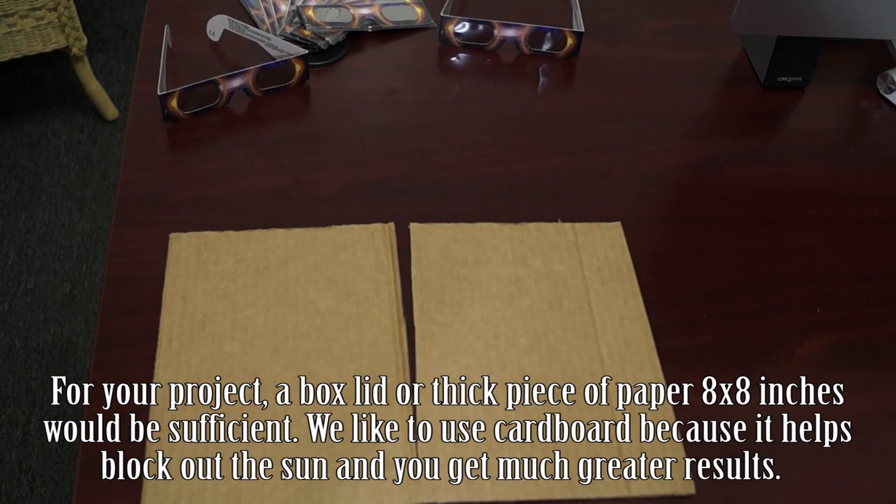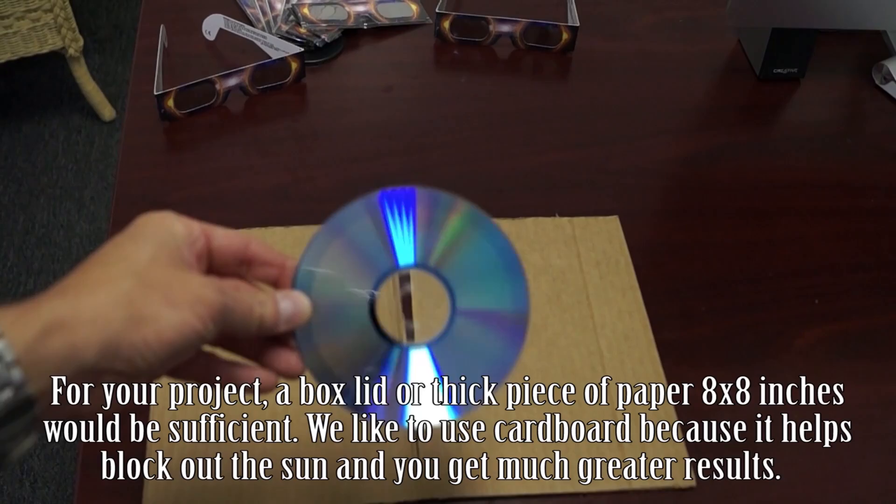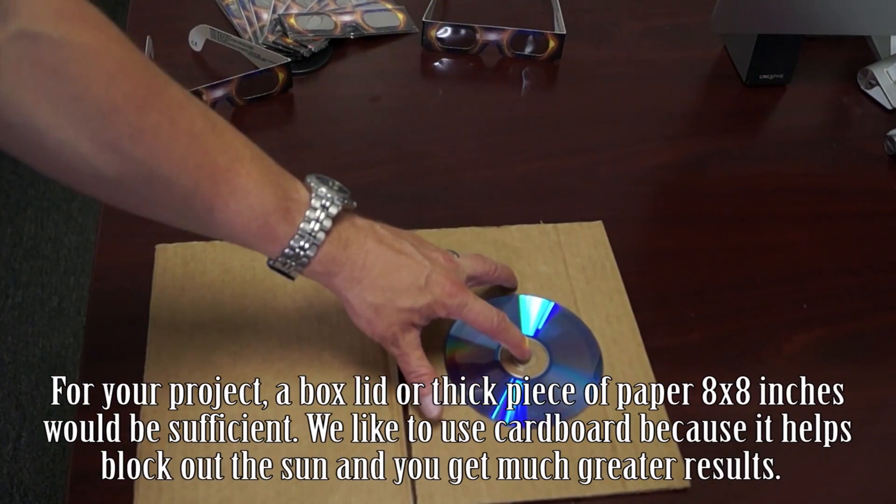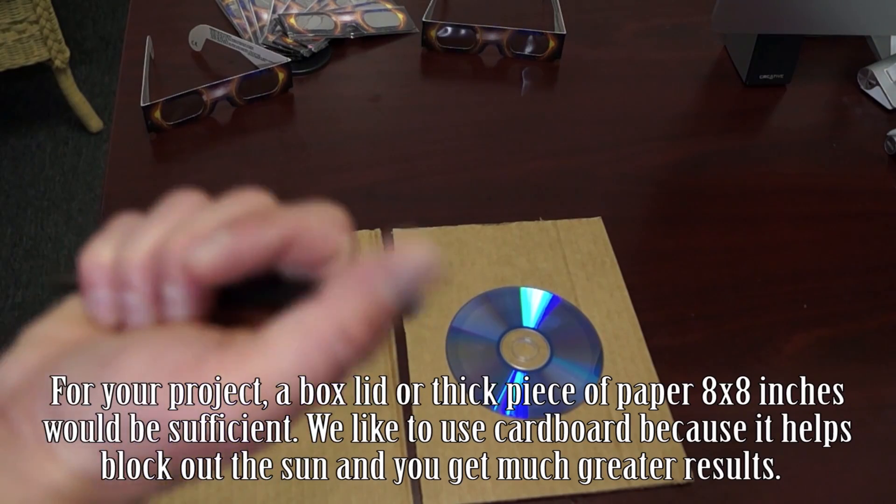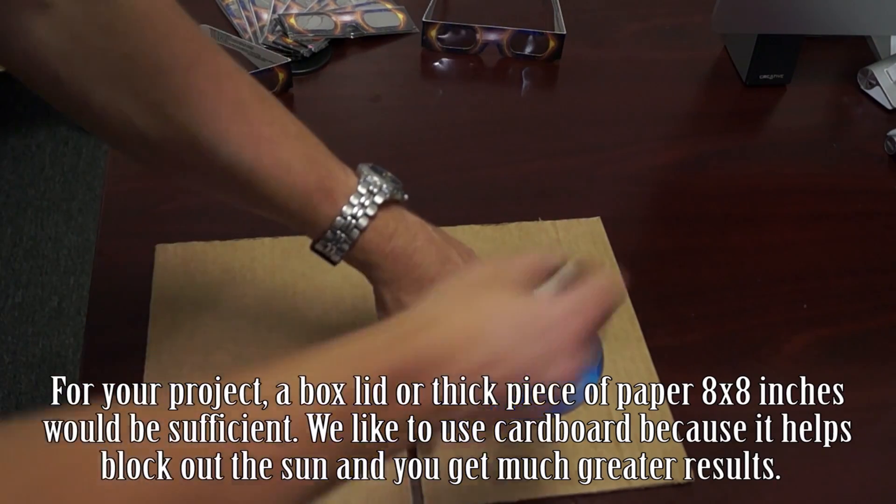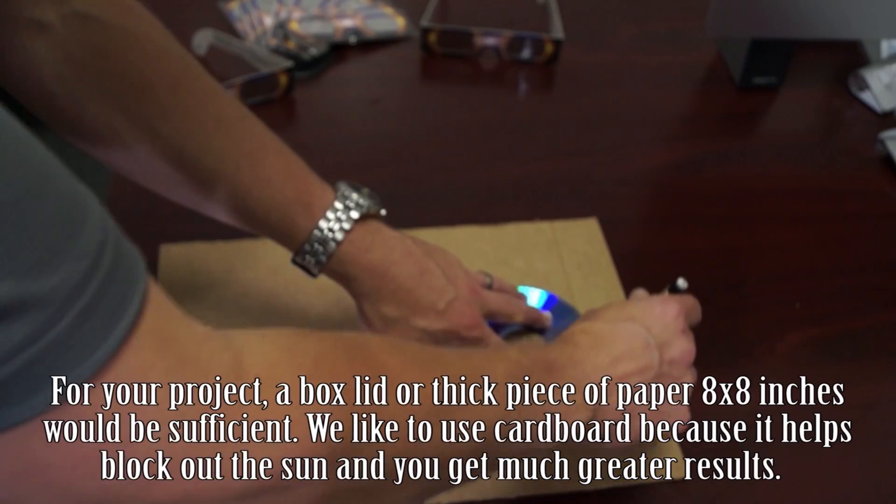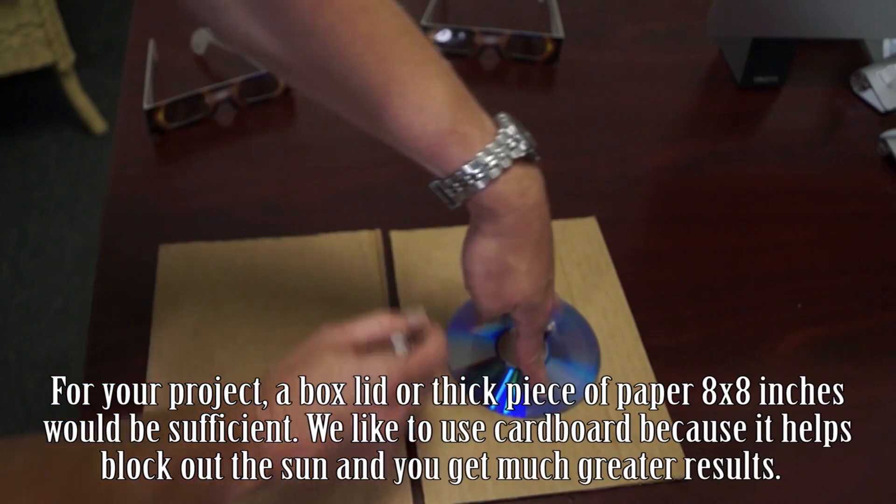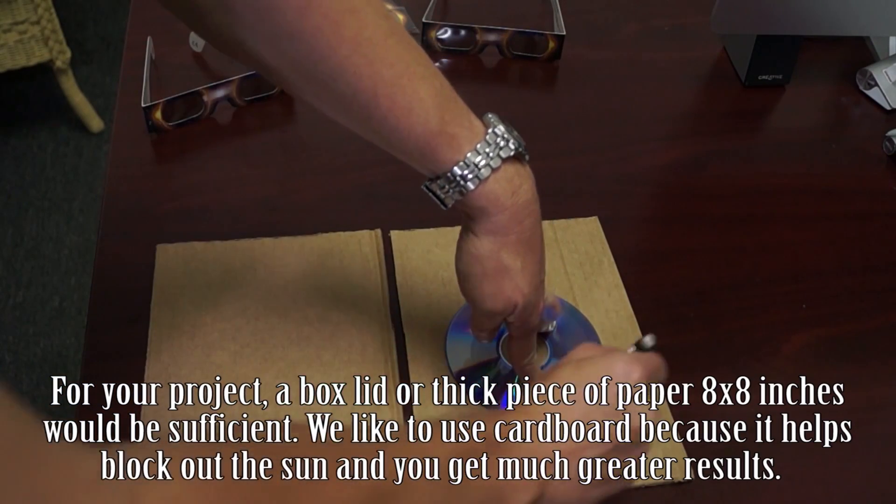So there are a couple of different ways that we can create a perfect circle. One of the ways that I find to be the easiest is to take an old CD and just lay it down in the center of your cardboard. You can hold it with your hand and then just trace the outline of your CD.